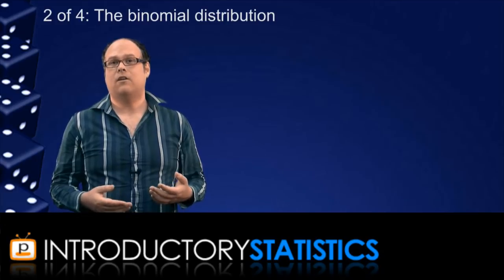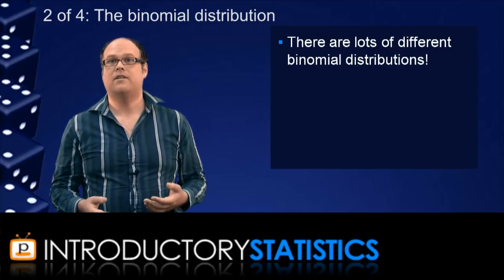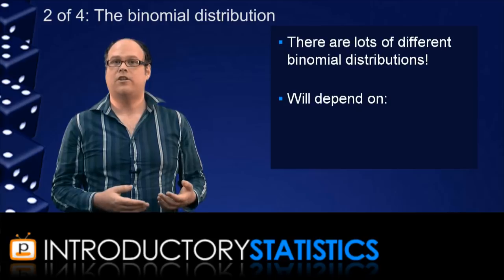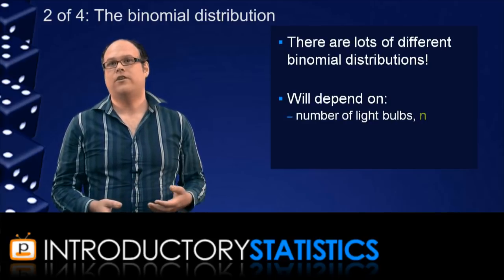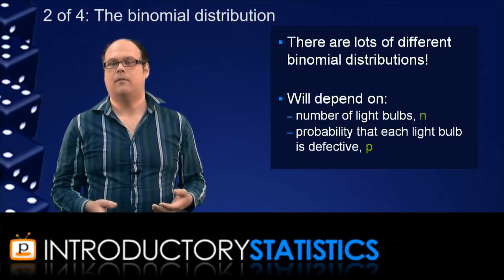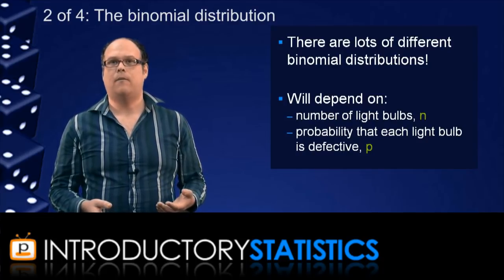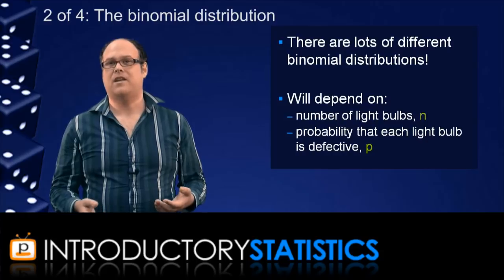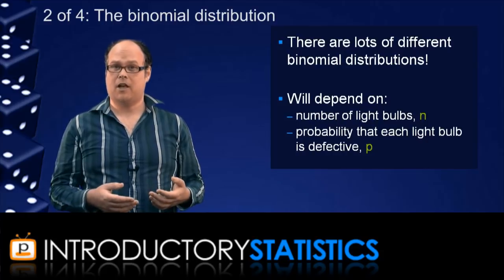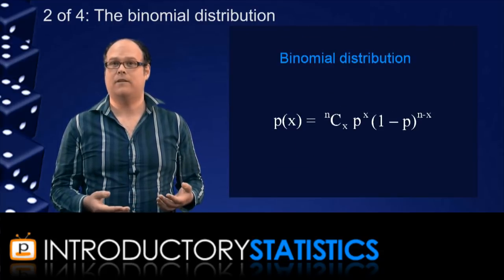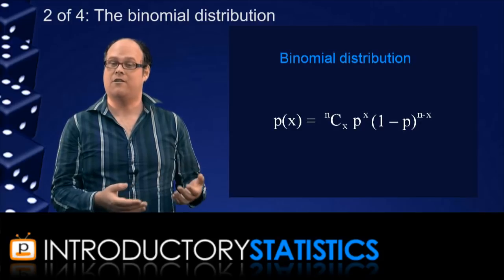Now there are actually lots of different binomial distributions because the formula would change if you were to check a different number of light bulbs or if you change the probability that each individual light bulb is defective. So let's say in general that you check n light bulbs and that the probability that each one is defective is p. The probability that x light bulbs are defective is then given by this formula and that's the binomial distribution in general.